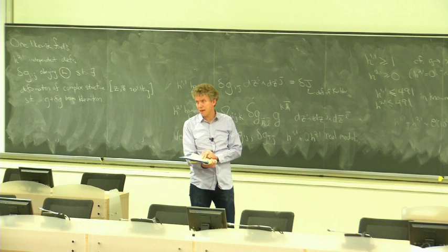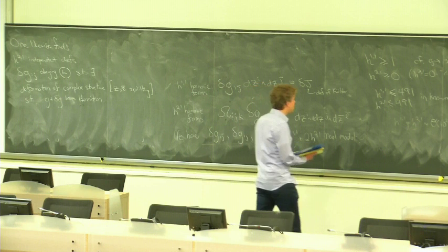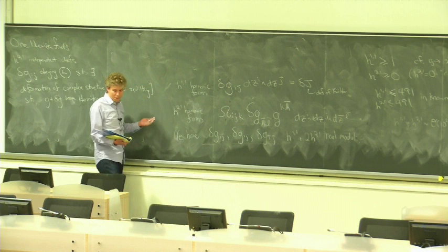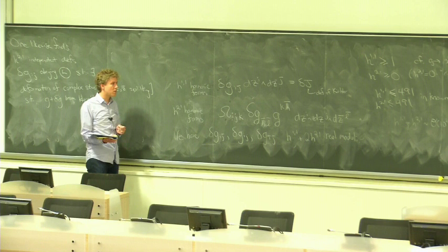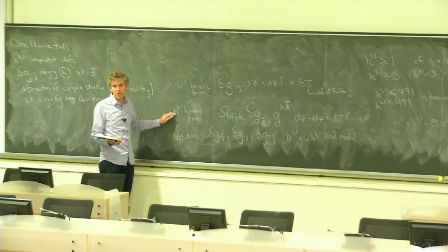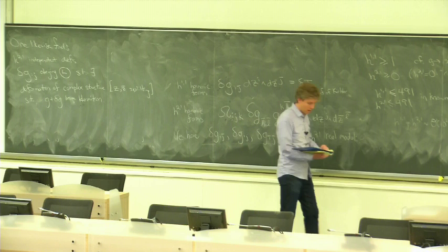Note: these are not the only moduli that result from compactifying string theory on a manifold like this — these are just the metric moduli. There are also moduli from taking the various p-forms present in the theory and reducing them on the space. In particular, if we take some p-form — one of the Ramond-Ramond p-forms, or the NS-NS 2-form — and consider a configuration where such a form is proportional to one of these harmonic objects, we find a massless field in four dimensions. One gets considerably more than just this number of moduli.